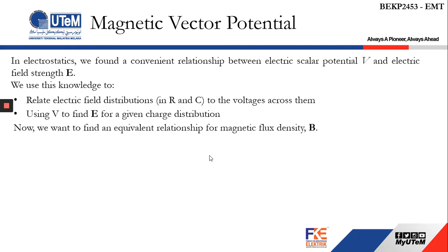We need to look back for electrostatics and magnetostatics. For electrostatics, we have this equation here which states the relationship E equals to negative gradient of the electric scalar potential.